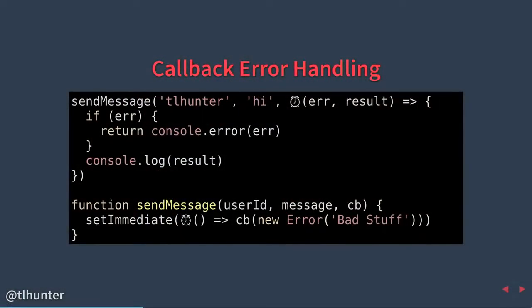With error handling in callbacks, you never want to throw an error within a function that expects a callback — you'll confuse the calling environment. Engineers aren't expecting to wrap a function call in a try/catch. So when you encounter an error, you want to call that callback where the first argument is an error value. One thing I'm doing here is wrapping that call in a setImmediate rather than immediately executing the callback in the current stack. If you were to call that callback immediately, the calling environment would see things occur out of order.